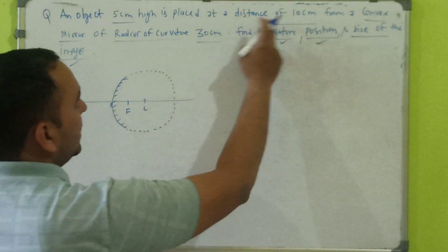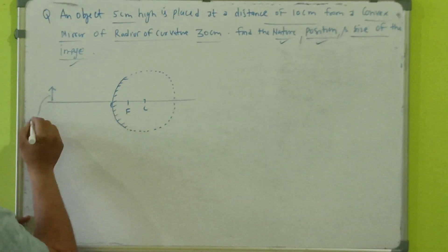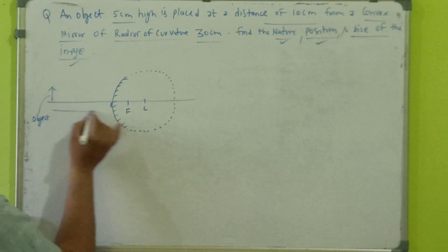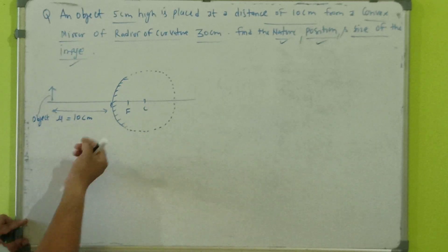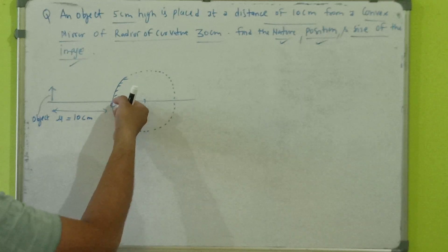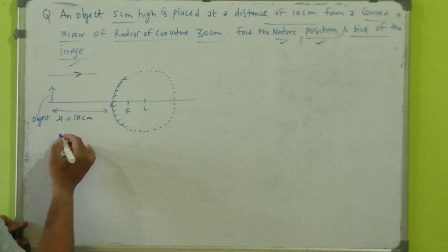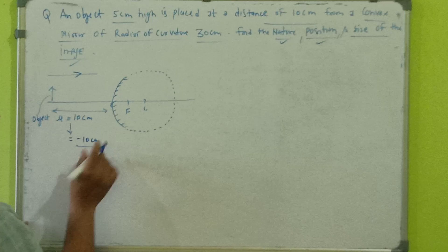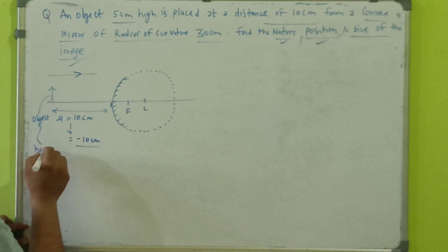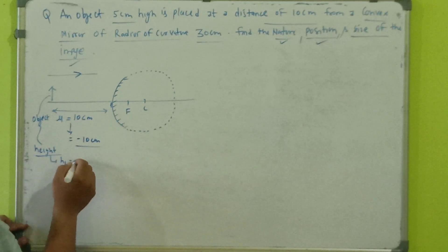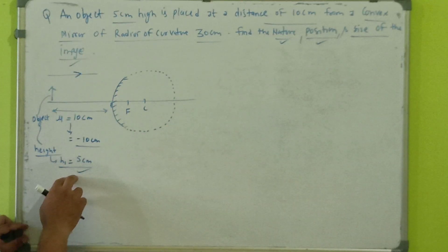We already know that an object should be placed in front of the mirror. The object distance is given as 10 centimeters from the convex mirror. When we measure the object distance, we measure it from the pole, against the direction of the incident ray, which is towards the mirror. So the object distance u becomes minus 10 centimeters. The object height h1 is given as 5 centimeters, and it remains plus 5 centimeters because it is above the principal axis.